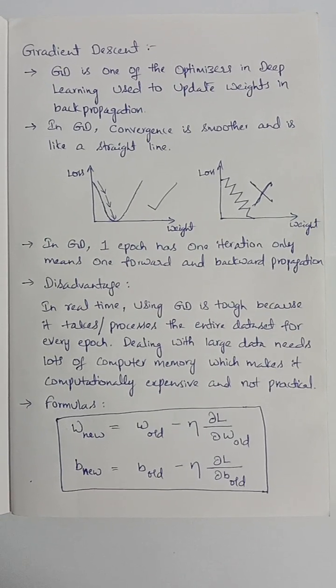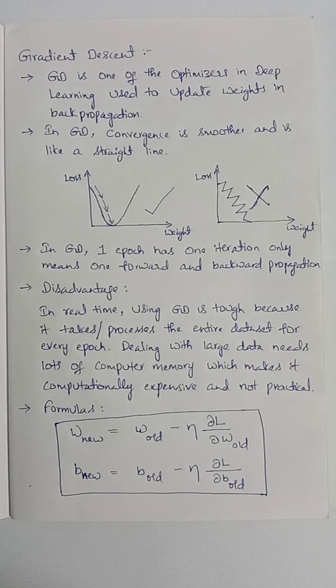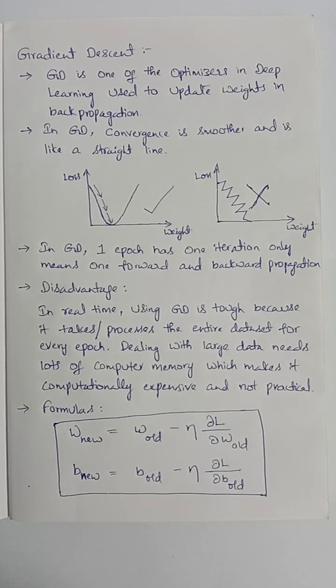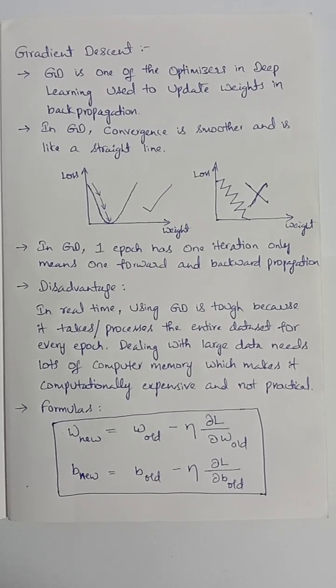Gradient descent is one of the optimizers in deep learning used to update weights in back propagation. In gradient descent,